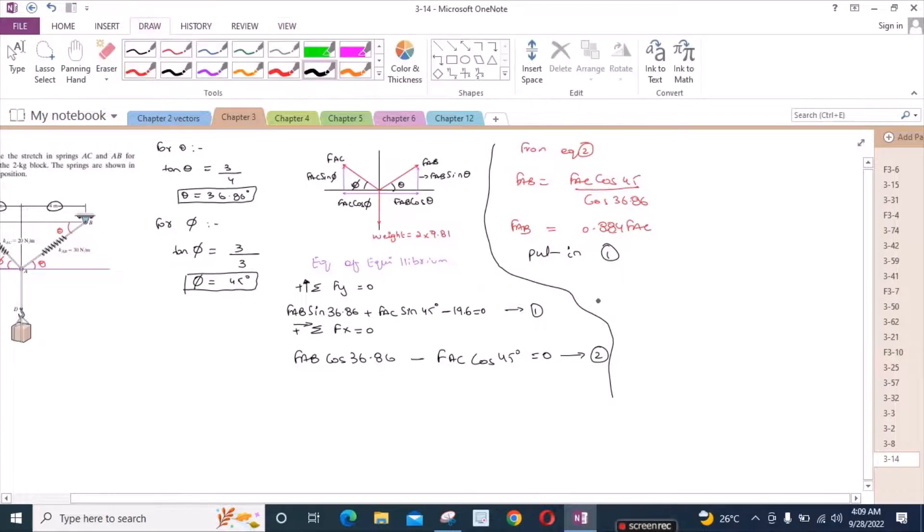Equation 1 would become 0.884 FAC into sin 36.86 plus FAC sin 45 equals to 19.6. So from here, FAC is equal to 15.84 newtons.